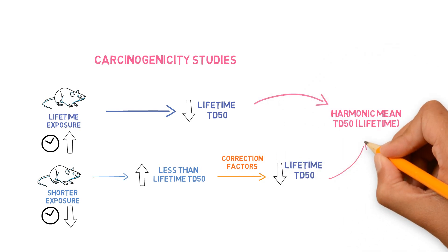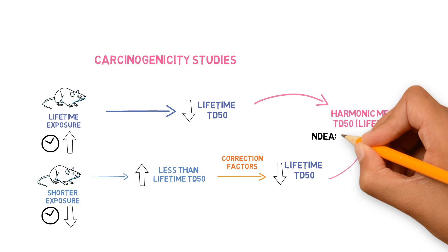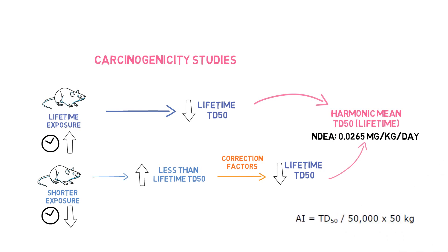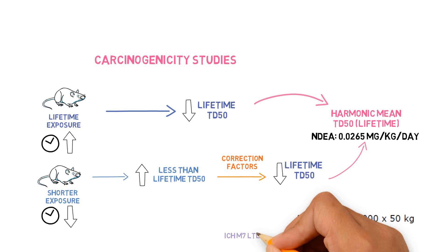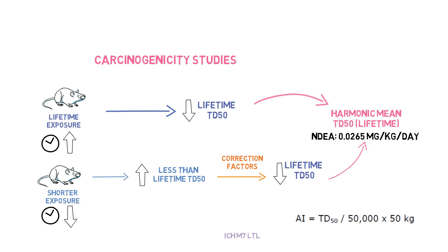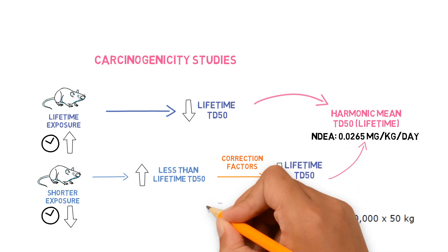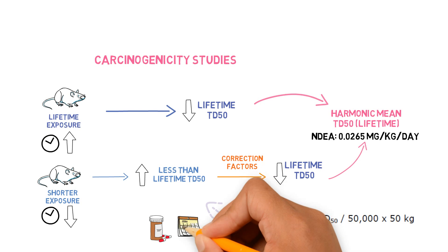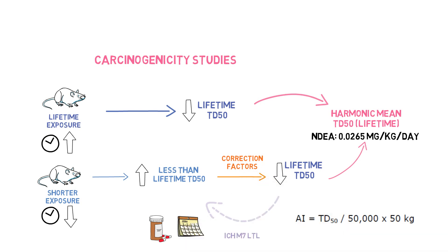The harmonic mean derives from all these different lifetime TD50s. For NDEA this is 0.0265 milligrams per kilogram per day, and by applying this equation we can find the acceptable intake which was recommended by health authorities. This now explains why ICH M7 proposes the less than lifetime approach — it's almost like we are correcting this back, because a lifetime TD50 does not make sense when the patient is exposed to a drug for only a short period of time.